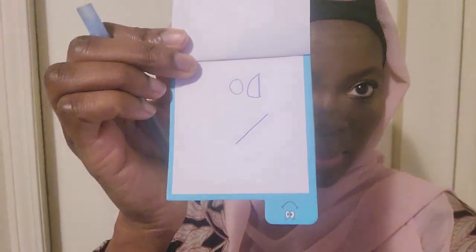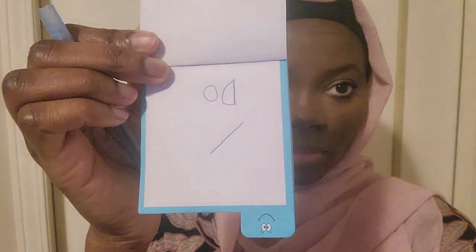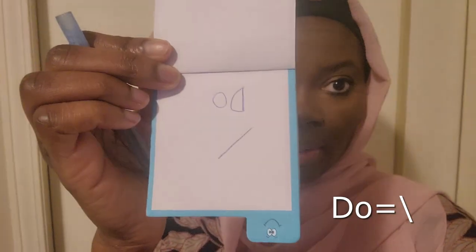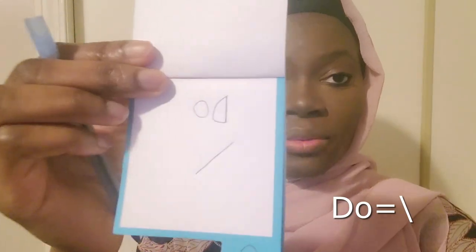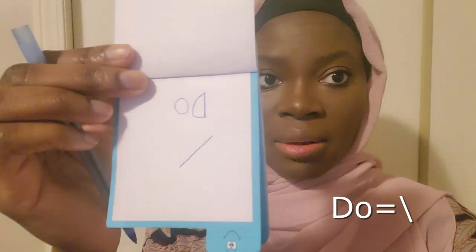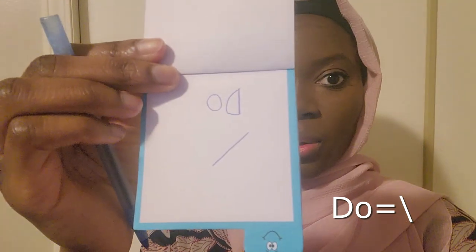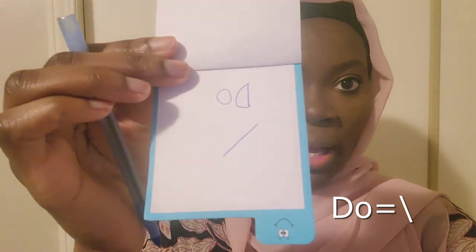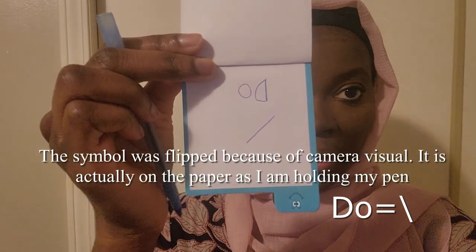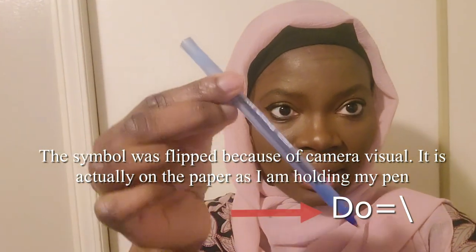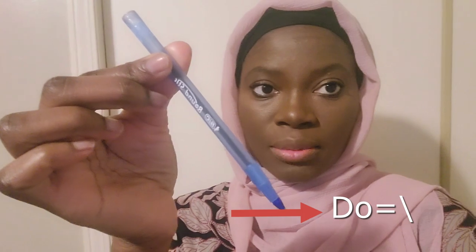This is the Do sound — but mind you, the Do symbol will be the other way on your side because of the way of viewing the camera. I've flipped this around, so the Do symbol will now be like how I am holding my pen. So literally, Do is written like this on paper, but it will appear flipped — and that's the symbol for Do.